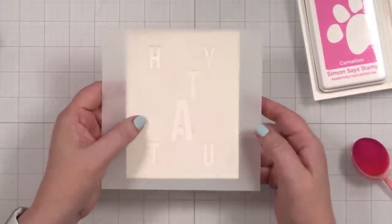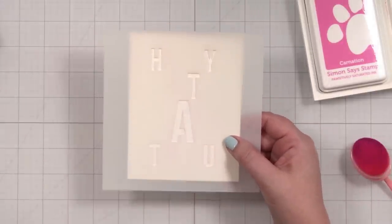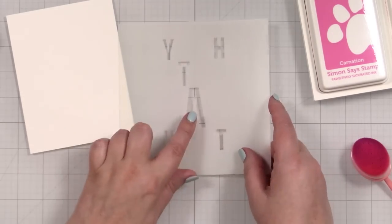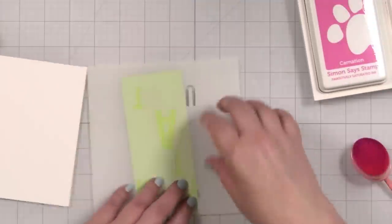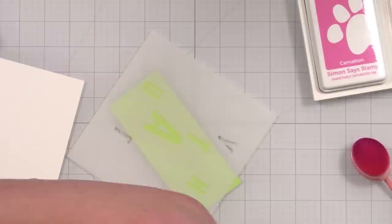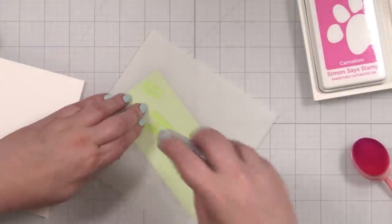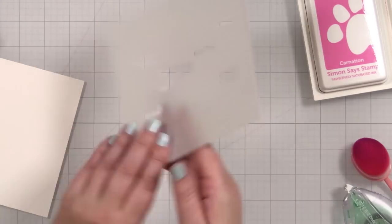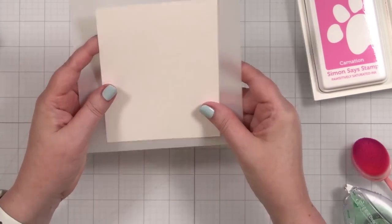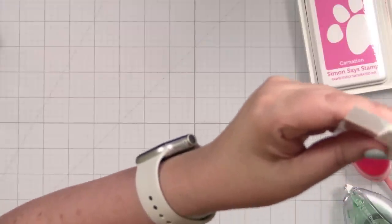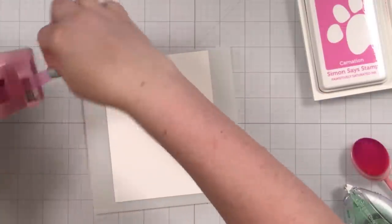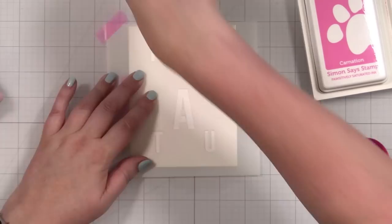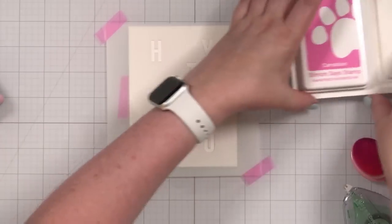We're going to start with the first stencil, but I want to show you something. This little piece right there is very delicate. So I'm actually going to put a little bit of repositionable adhesive on here. The reason I'm going to do it is just because I want that to not move. That's going to hold it in place and it's not going to hurt anything on my stencil. You're going to flip it over, line it up, and I'll tape the stencil into place.